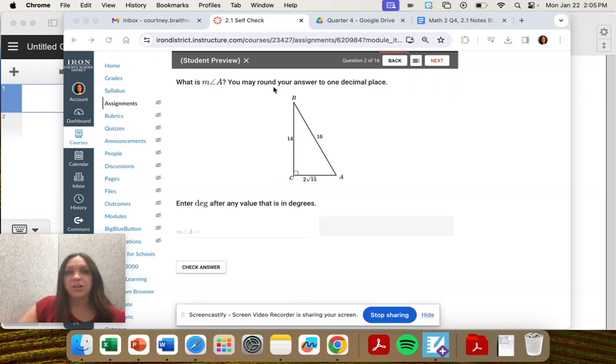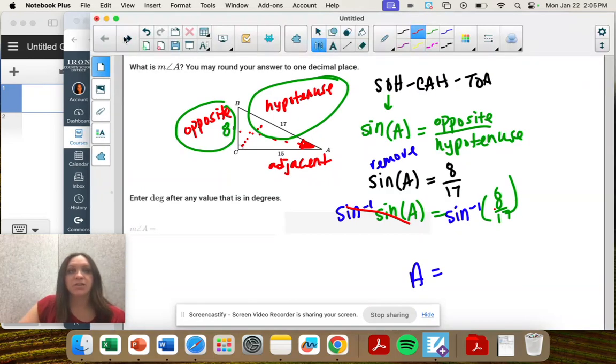Question two: what is the measure of angle A? Round to one decimal place and enter degrees. So we do want to enter degrees because we're finding an angle.